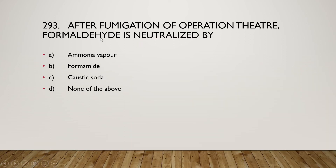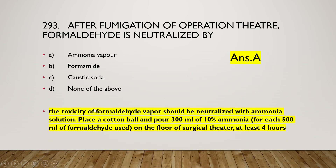The next question is: after fumigation of an operation theater, formaldehyde is neutralized by (A) ammonia vapor, (B) formamide, (C) caustic soda, or (D) none of the above. The right answer is option A — ammonia vapor. The toxicity of formaldehyde vapor is neutralized with ammonia solution by placing a cotton ball with 300 ml of 10% ammonia for each 500 ml of formaldehyde used on the floor of the surgical theater for at least four hours.